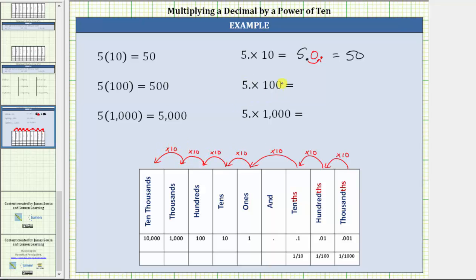Next, we have 5 times 100. Because 100 is 10 times 10, we move the decimal point two places to the right. So to make 5 one hundred times larger, we move the decimal point right two places. Fill in the missing digits with zeros, which gives us the product 500.